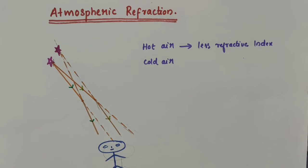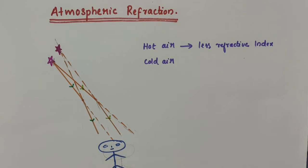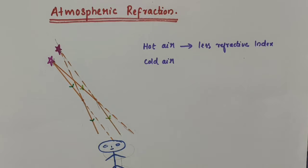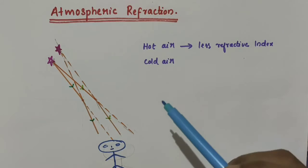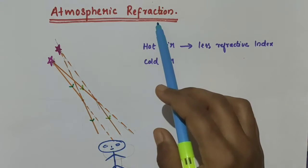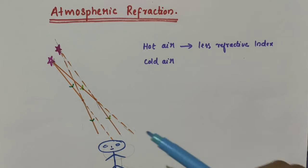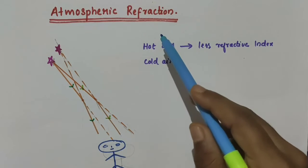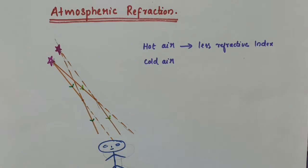Hello everyone. We have discussed about refraction, that is light ray changes its path when it travels from one medium to another having different optical density. In this video, we are going to discuss about atmospheric refraction, that is how does refraction take place in the atmosphere?